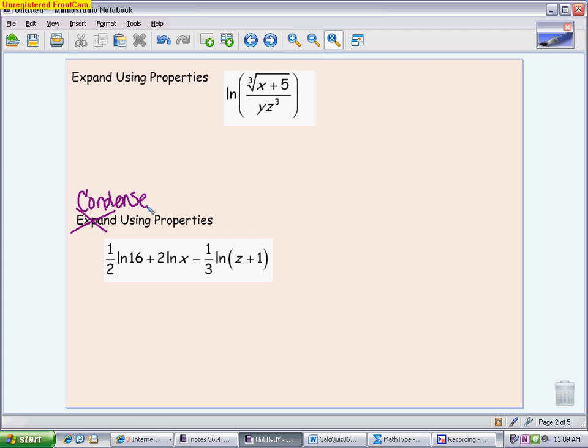So for the first one, when I go to expand it, first thing I notice is the top is to the one-third power, because it's a cube root. So I'm going to have one-third the natural log of x plus 5. And then I'm going to subtract what's in the bottom. I have two different factors in the bottom. So first I have the natural log of y, and then I have to bring the power in front. I have minus 3 natural log of z.